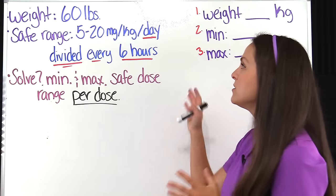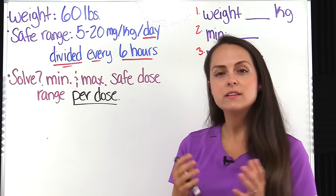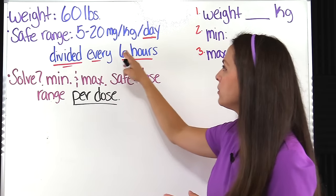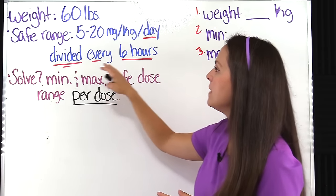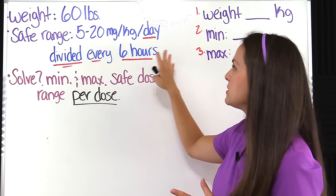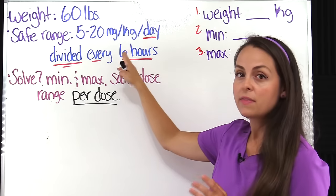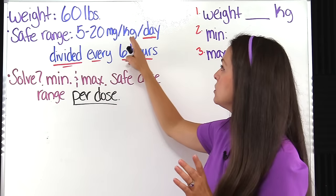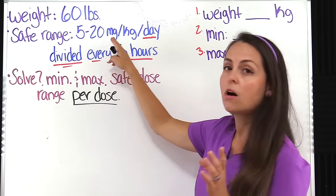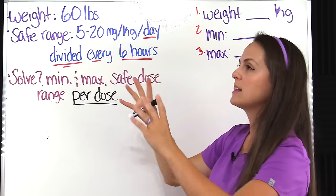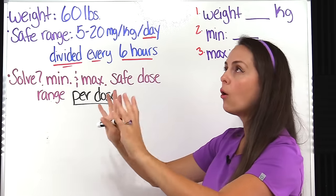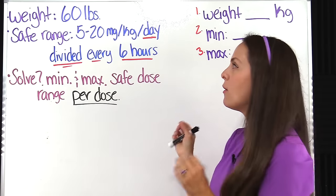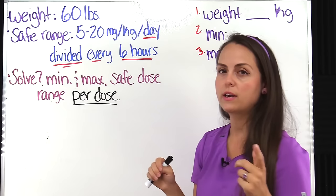This problem says that we have a child that weighs 60 pounds, and they need a particular medication that has a safe dose range of 5 to 20 milligrams per kilogram per day, divided every six hours. So for every kilogram that patient weighs, they need 5 milligrams on the minimum side to 20 milligrams on the maximum side per day, divided every six hours. Always pay attention to how they're presenting that information so you don't get confused.